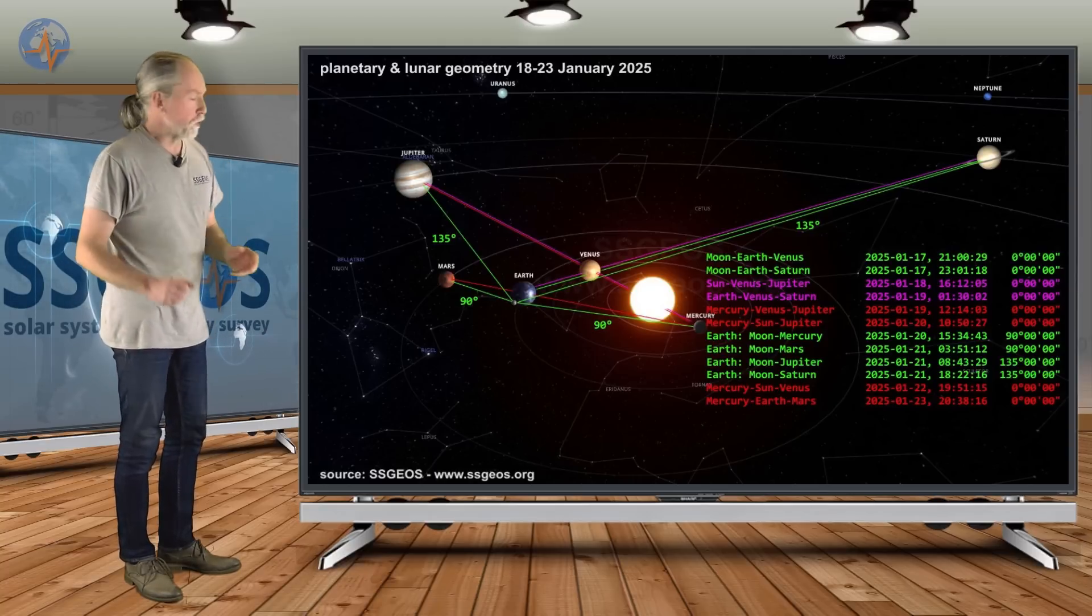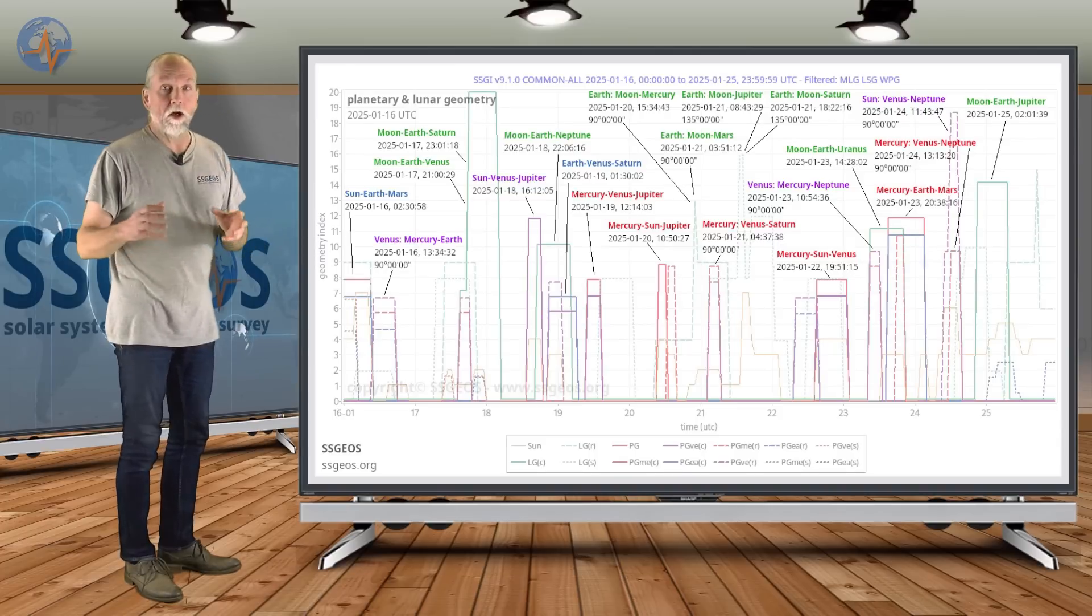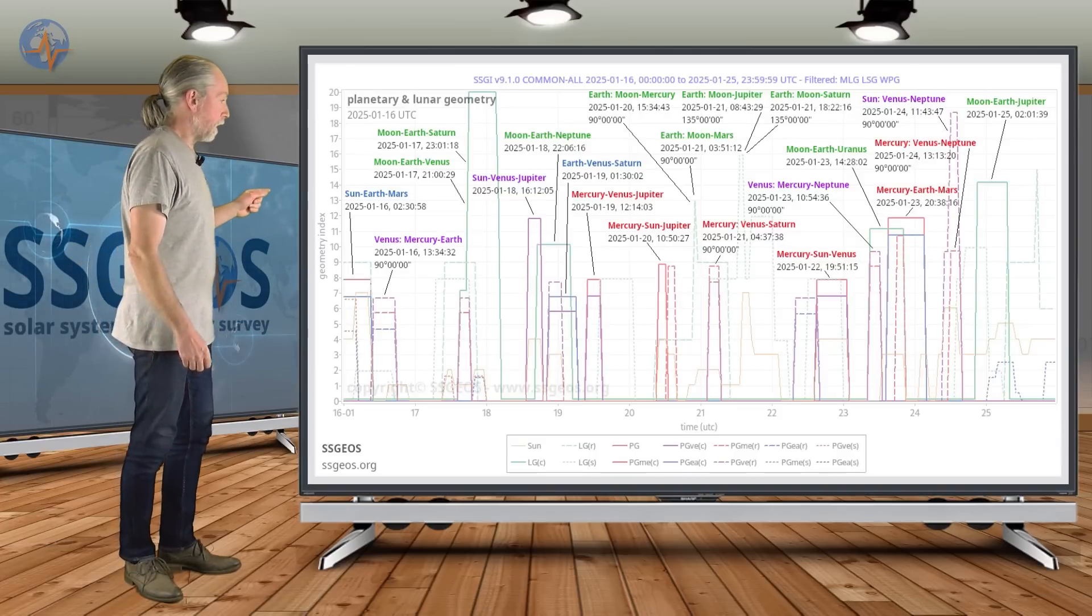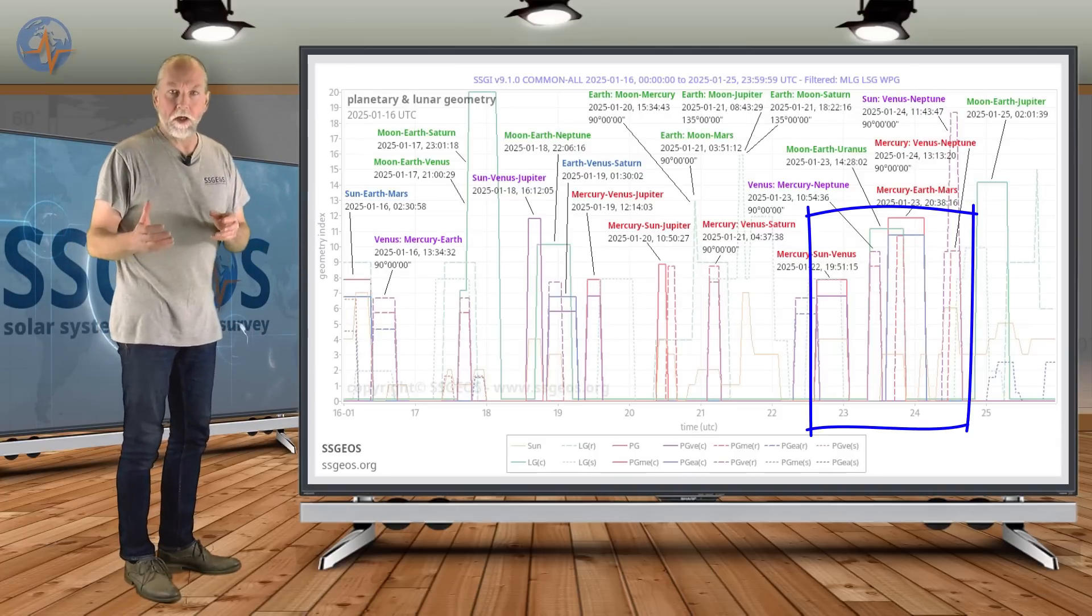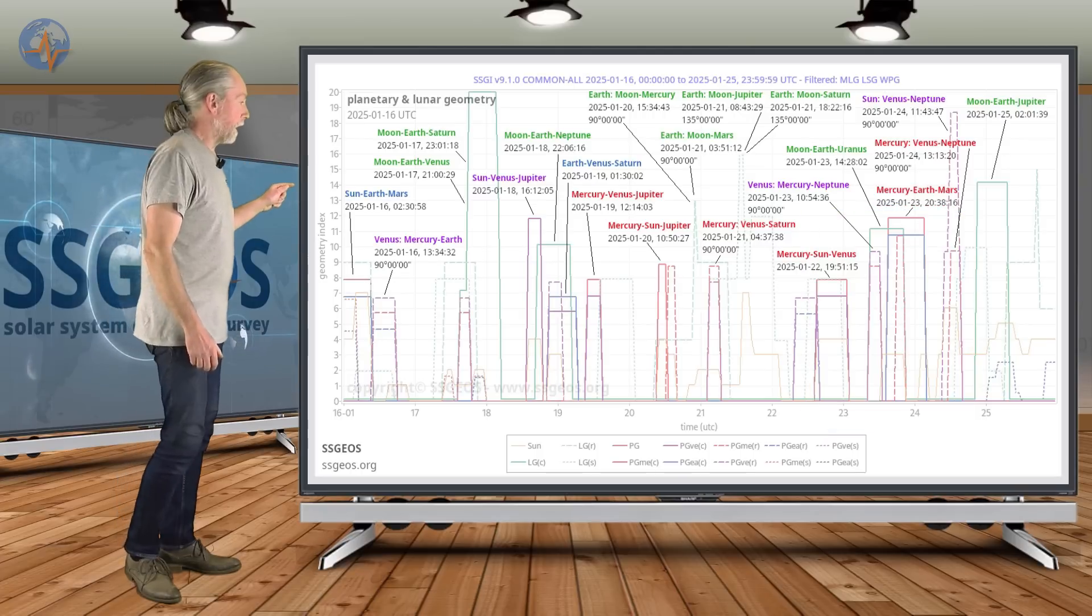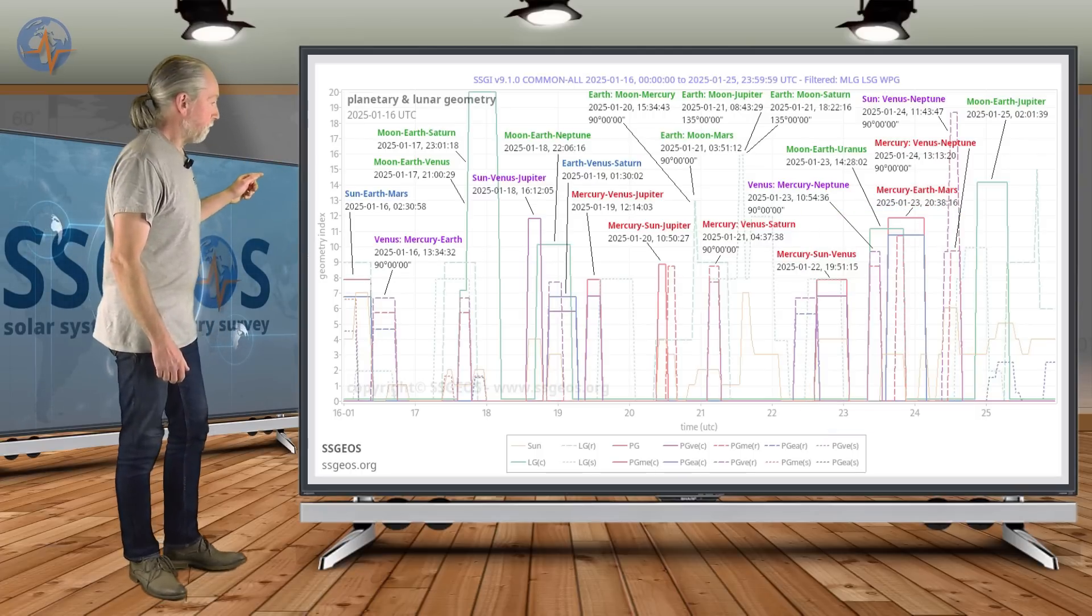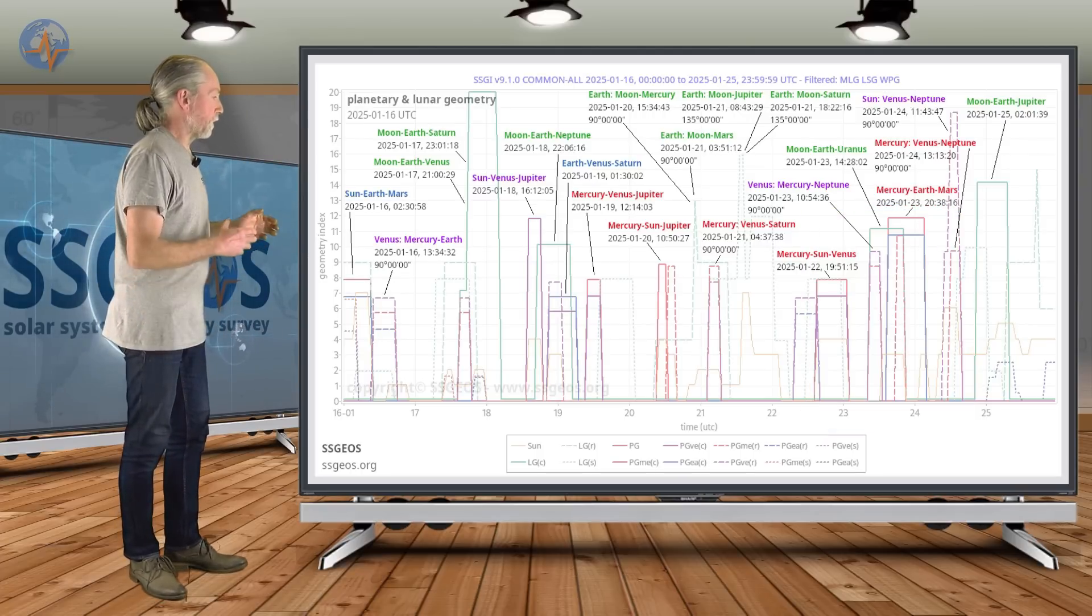not necessarily after the convergence on the 19th because we're going to have a more critical convergence around the 24th. That's where Mercury, Earth and Mars are actually going to be. And that brings us to that timeframe around the 23rd, 24th.